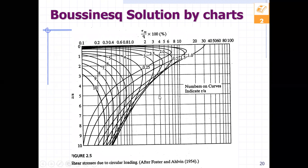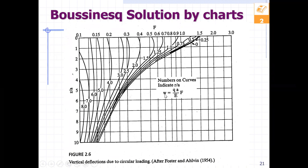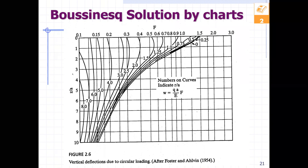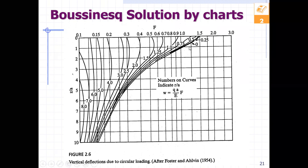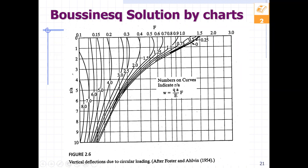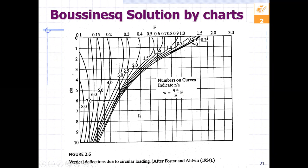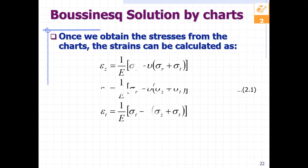For deflection, we use the equation: w = (q × a / E) × F, where the factor F comes from the chart. When you know r/a and z/a, you find where those two values meet on the deflection chart and obtain F, then use it in the equation to get the deflection.